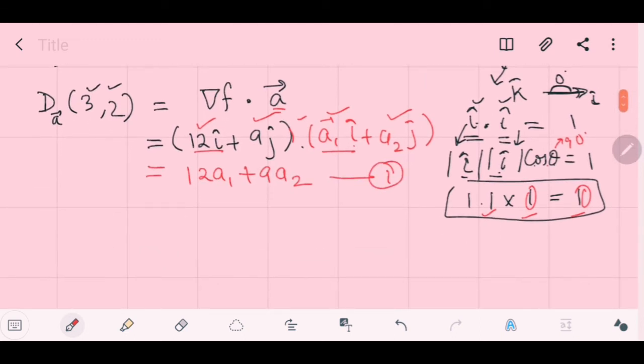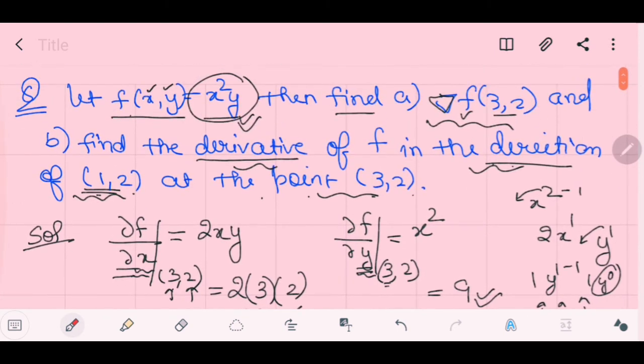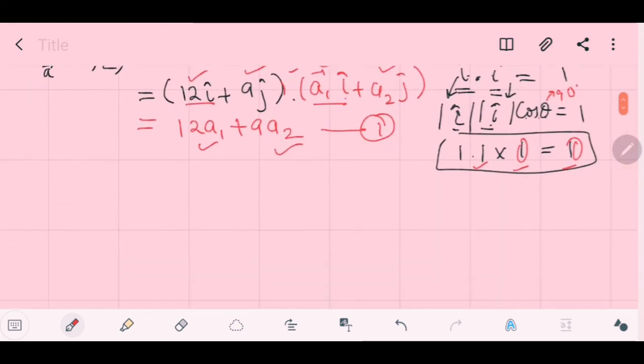So, this is your derivative. Now, you need to find out the values of a₁ and a₂. Now, whenever you have to find, you have made this equation, you need to check out which is the direction here. The direction in the form of (1, 2). So, now, you need to find out the magnitude of that unit vector.